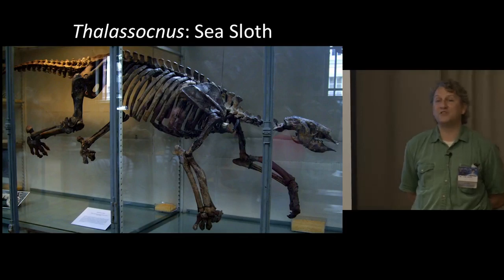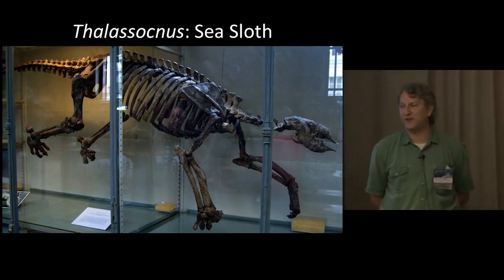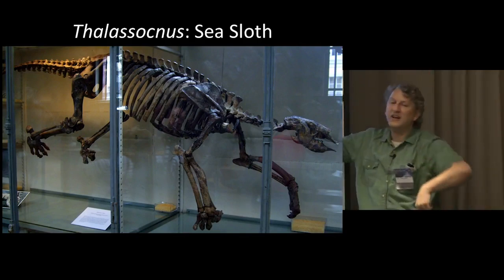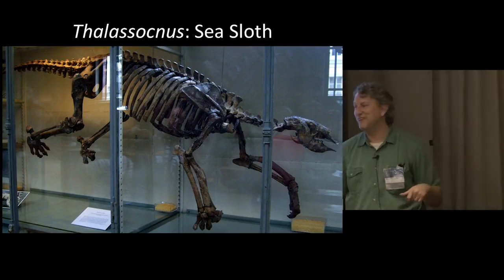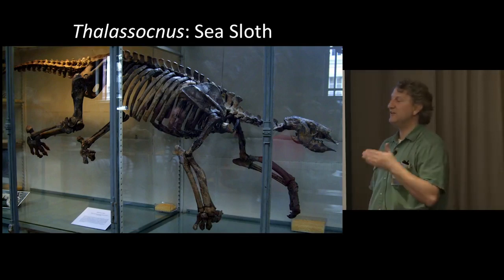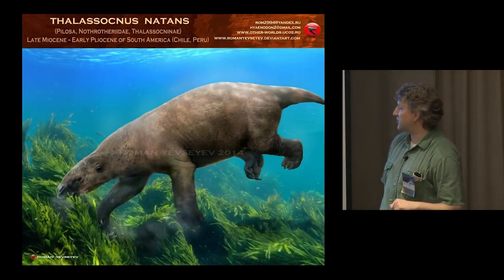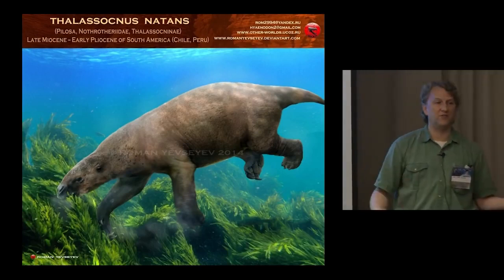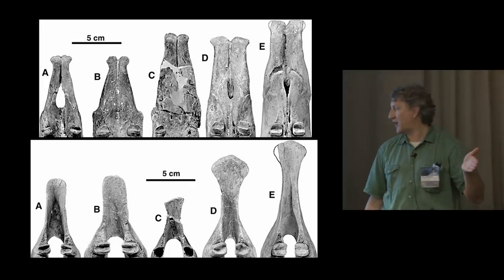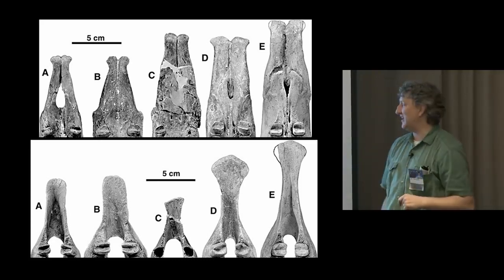Some sloths even went to sea. Sloths are actually really good swimmers - today's tree sloths, as seen in Planet Earth 2, can go faster in the water than on land or in trees. There is one aquatic genus that lived in a near-shore environment eating kelp and seagrasses. We don't know whether it was shaggy or lost its fur. Within that genus we see a transformation over time to forms with longer, more bill-like snouts for grasping sea plants - a pretty cool evolutionary transition.